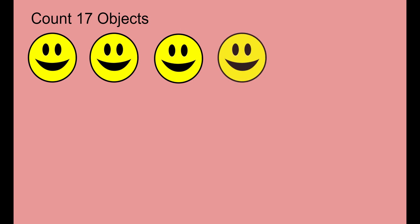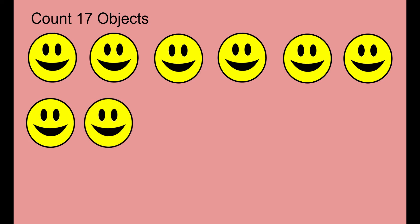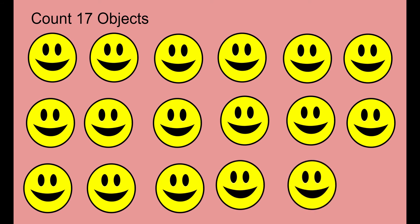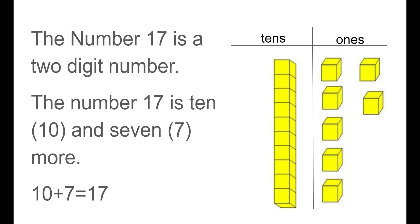Now we're going to count 17 objects. Please count with me one by one to make sure we get all the way to 17. We're going to line up our objects so it makes our counting a little bit easier. Here we go. Let's count together. We have 17 smiley faces.